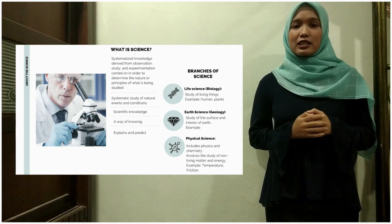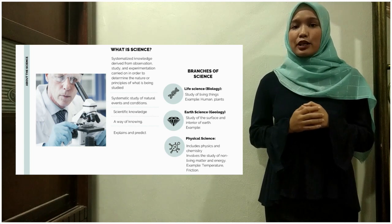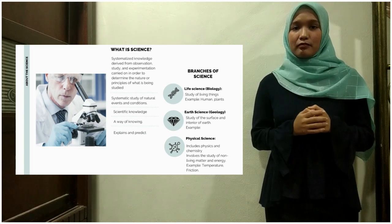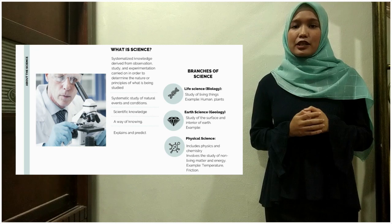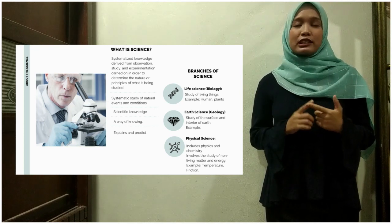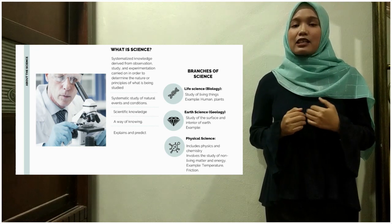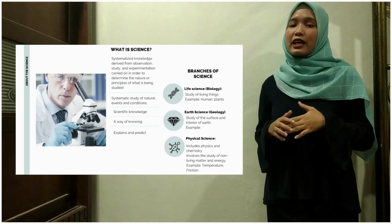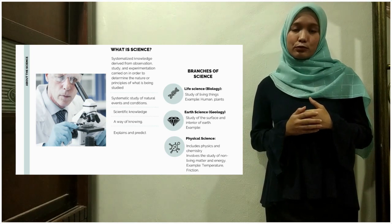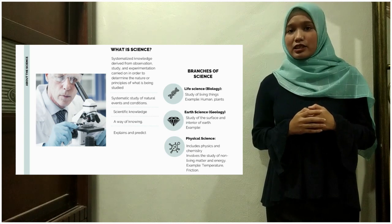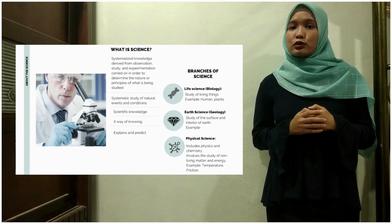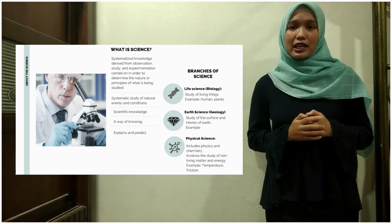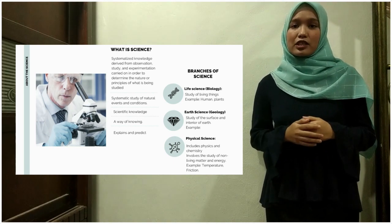The first branch is called biology or also known as life science. It is a study of living things such as humans, plants, or cats. Any study related to living organisms is known as biology. Secondly is earth science or also known as geology. It is a study of the surface and interior of earth such as soil, coal, and petroleum.